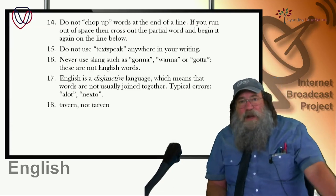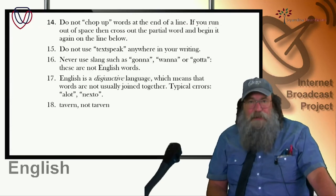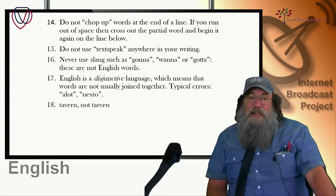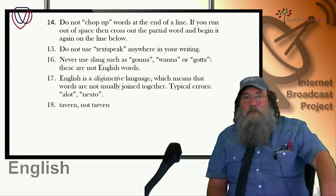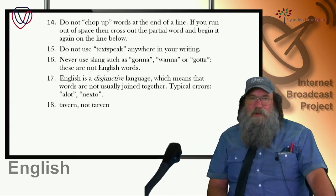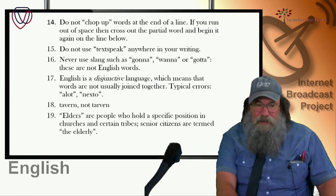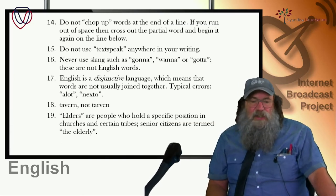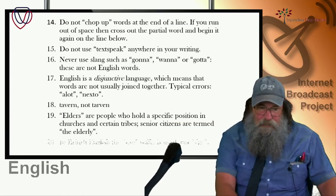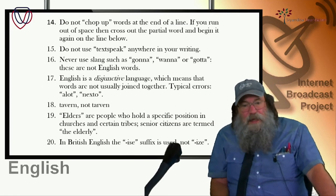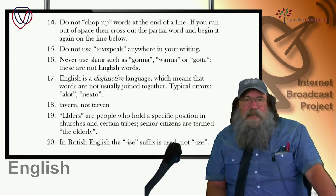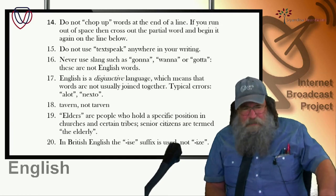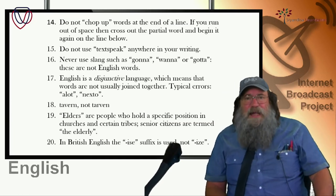One of the most common spelling errors I encounter: tavern is very often written as 'tarven'. Elders are people who hold a specific position in churches and certain tribes — senior citizens are termed 'the elderly'. Please remember that. In British English, which we speak in South Africa, the '-ise' suffix is used, not '-ize'. The apostrophe is used to indicate possession or contraction, but never a plural. Apostrophe does not indicate plural — remember that.